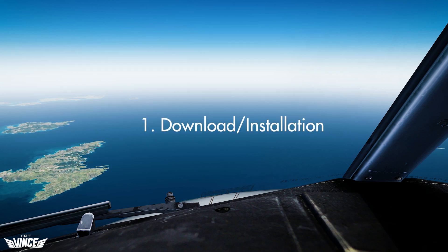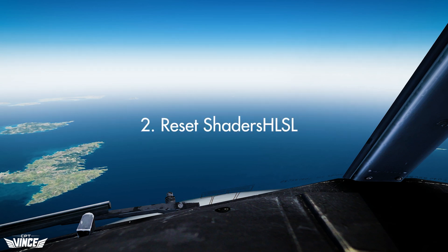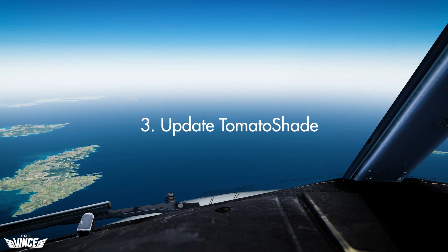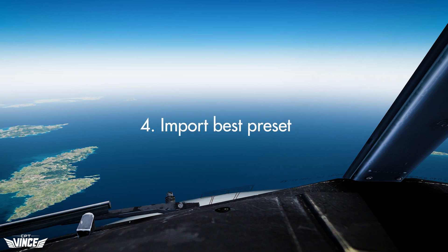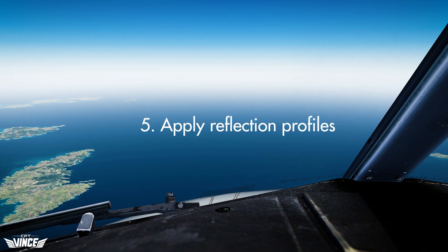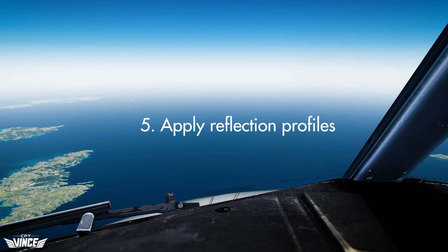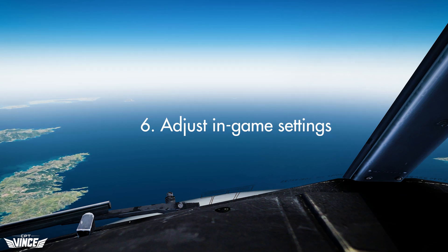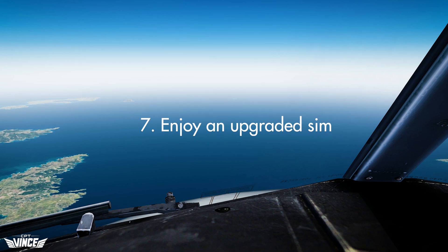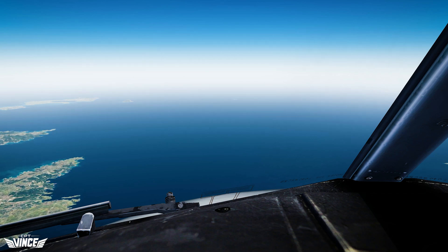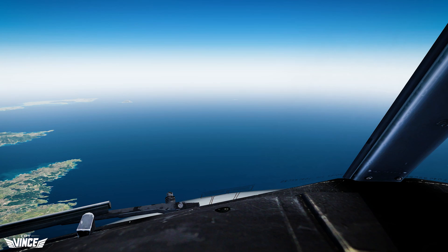Number one: download and installation. Number two: reset your HLSL shaders to avoid any issue with Tomato Shade. Number three: update Tomato Shade after installation. Number four: import the best presets available for Tomato Shade, according to me of course. Number five: install the reflections profiles. Number six: adjust P3D in-game settings to match the preset. And finally, number seven: enjoy stunning visuals. Following these steps should technically enable you to make proper usage of Tomato Shade and to enjoy the shader program to its fullest.